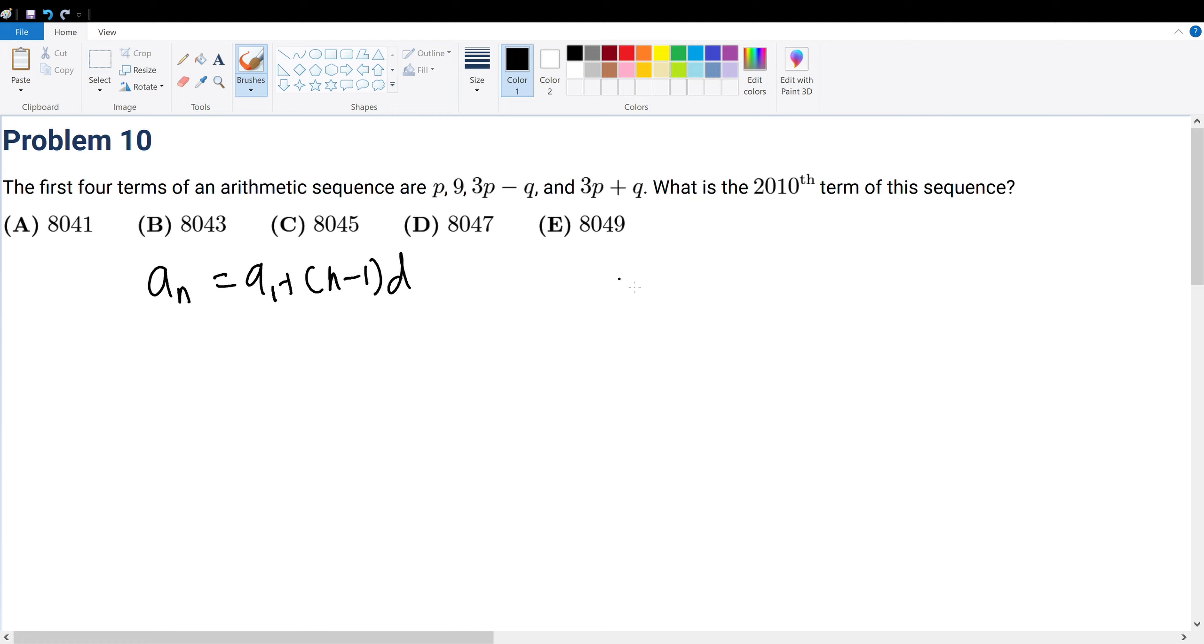For a common difference, or in an arithmetic series, every term differs by a constant amount, and let's call that quantity r.